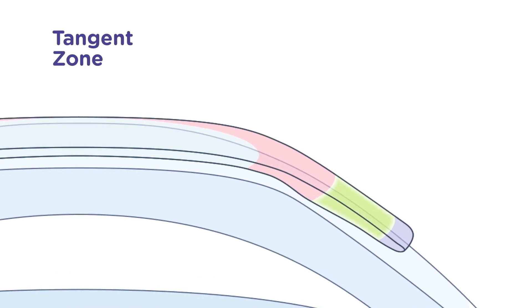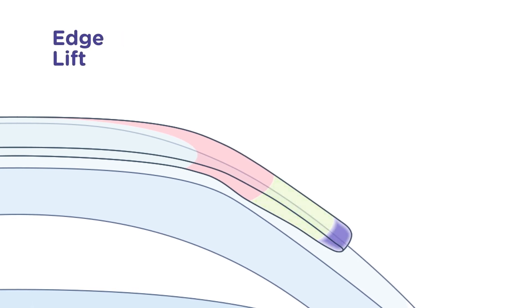The tangent zone is a flatter peripheral region that is the point of touch for the eye, serving to evenly distribute pressure and also helping center the lens on the eye, while the edge lift promotes a safe, healthy lens fit by facilitating tear exchange.